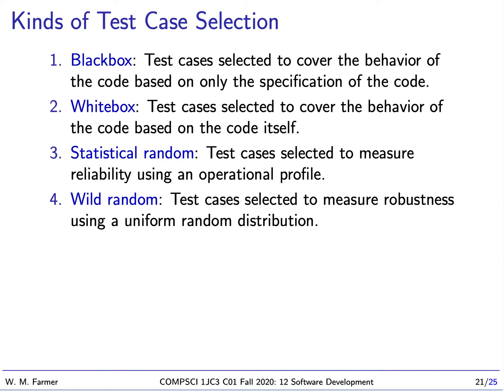Wild random testing is used for testing robustness. Here we just generate in a uniform way all kinds of random test cases. Most of these will probably never come up because they're well outside of the normal use of the system, but they might help us find problems with the software that we would never be able to find otherwise.